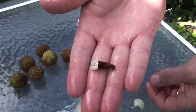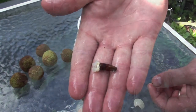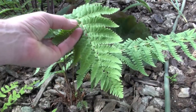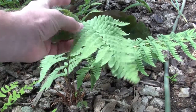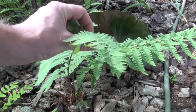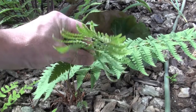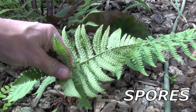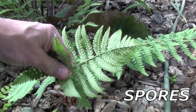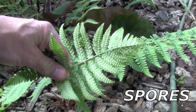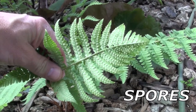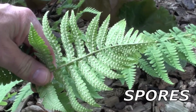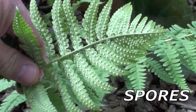But not all plants grow from seed. Take a look at this fern for example. This fern did not grow from a seed — it grew from a spore. These little bumps on the underside of the fern leaf are called spores, and each one could grow into a new fern plant.